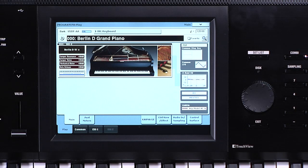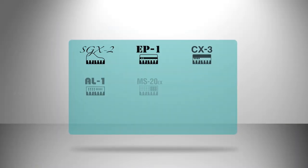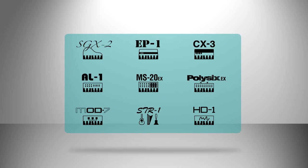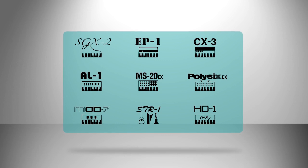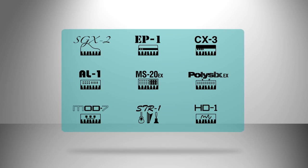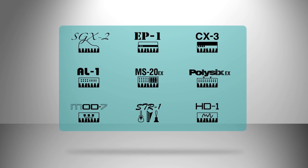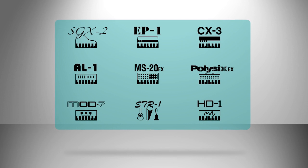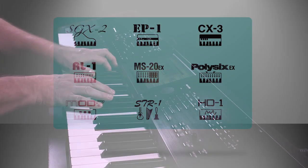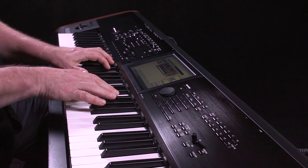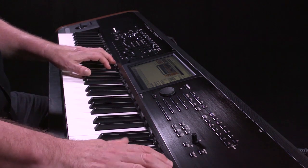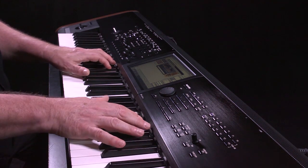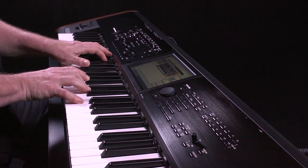One of the reasons the Kronos is so powerful is that it has nine sound engines. Sound engines are the technologies used to create a sound. Typically a keyboard uses one sound engine, usually sample playback technology, to create sounds. The Kronos is much more powerful. Understanding each sound engine may help you when deciding what sound to use for a particular musical application.